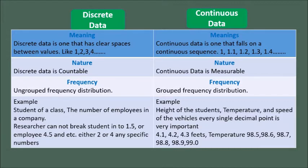Nature — discrete data is countable, while continuous data is measurable. Frequency — discrete data uses ungrouped frequency distribution, and continuous data uses grouped frequency distribution.